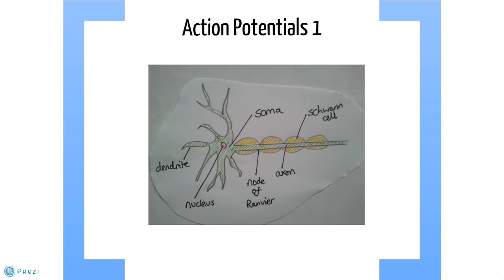How does an EEG work? First, let us consider what an action potential is. Brain activity is regulated by neuronal firing, with different neurons synapsing with others to elicit responses. Neurons consist of a cell body, or soma, which has dendritic projections into it which other neurons can synapse with, as well as an axon which has a selectively permeable membrane.